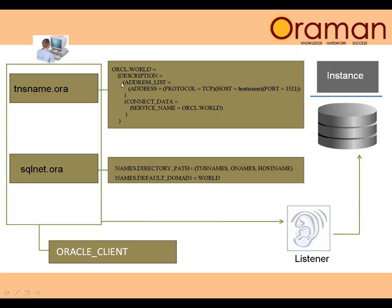The tnsnames.ora file specifies how you go from your machine to the host machine. The host name in the file references the server name, and on that server there is a particular port where the listener is listening — by default port 1521. It is listening at that port for a particular service name or SID. You are instructing: go to that IP machine, connect to the port, and behind that port there should be a service or SID running with the database — connect to that. This establishes a proper connection from client to server. But this is just the connection; you always need to provide your username and password, and the authentication process must happen on the server before you can execute any queries.